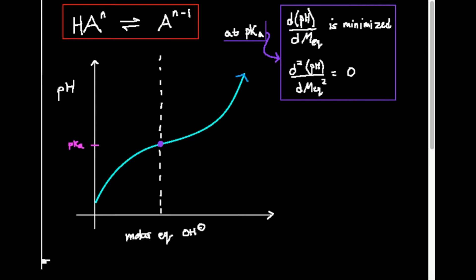We have a graph of pH versus molar equivalents of hydroxide — I'll refer to molar equivalents as M_eq. If I want to identify where the slope is lowest, then mathematically I want the slope of the pH versus molar equivalents graph to be a minimum. In derivative form, that means dpH/dM_eq has to be a minimum.